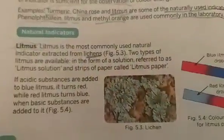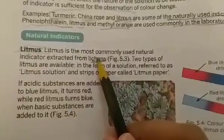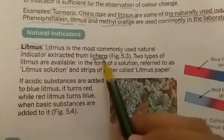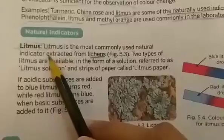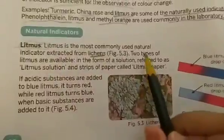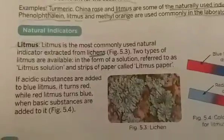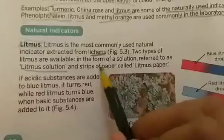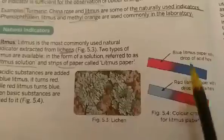In chapter one we studied about the symbiotic relationship between an algae and a fungus, and their symbiotic relationship is called lichens. From these lichens we get litmus, which is a natural indicator. Litmus is available in two forms: we can use it as a solution or as paper strips — called litmus paper. You can see here, these are the litmus paper strips.